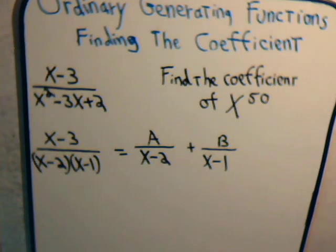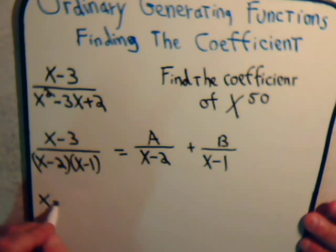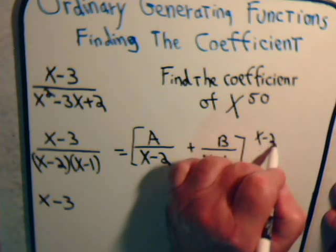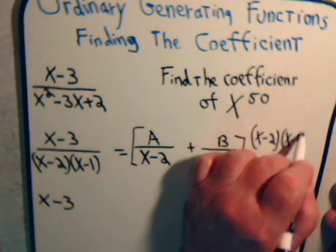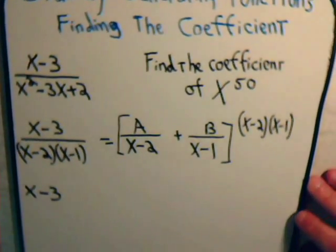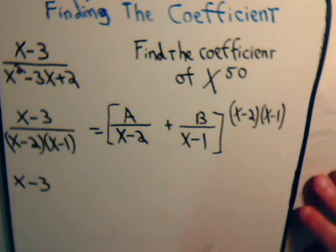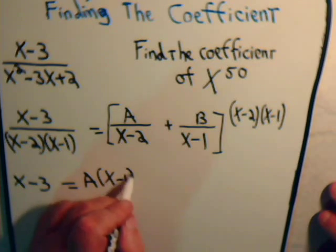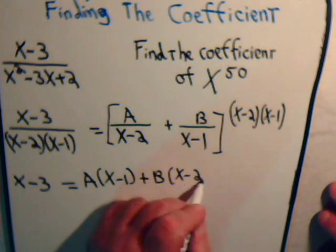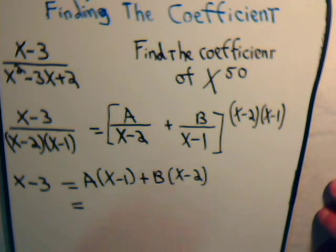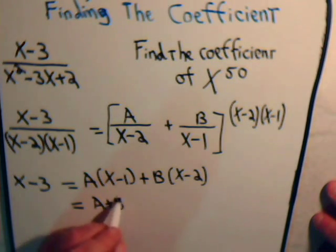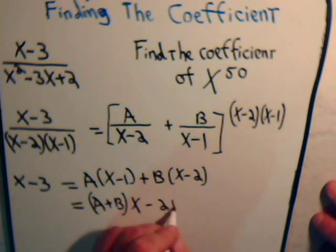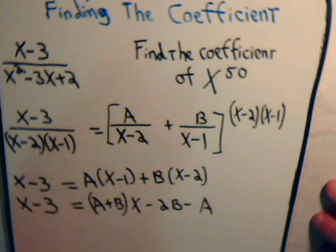So here, we modify both sides of the equation by this, so on this side, we're going to have x minus 3, and on this side, we have this expression times x minus 2 times x minus 1. Now to multiply through, what do we get? This is equal to a times x minus 1 plus b times x minus 2. So if we collect terms, we're going to have a plus b times x, plus ax plus bx minus 2b minus a. And that has to equal x minus 3.